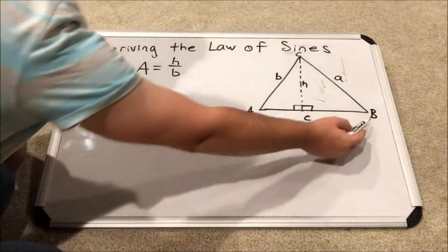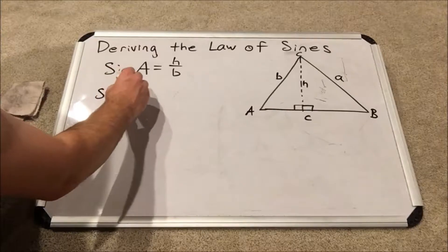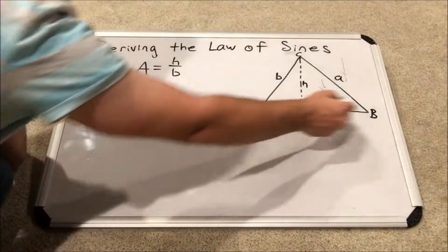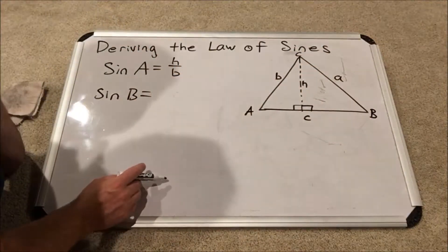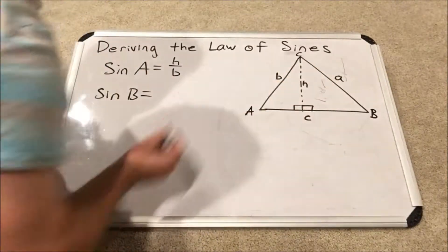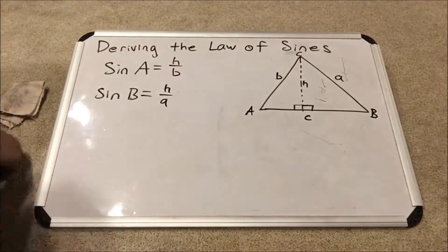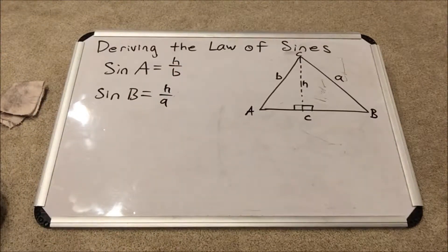And also, I'm going to write out what the sine of angle B is. The sine of angle B, if we look at the right triangle on the right, would be the opposite side, again, the altitude H over the hypotenuse A.